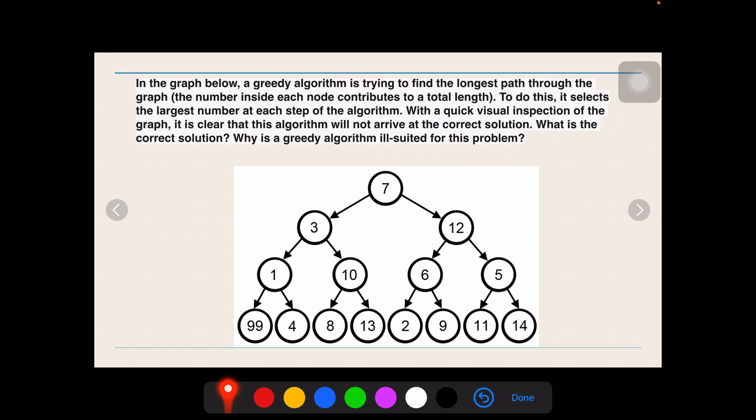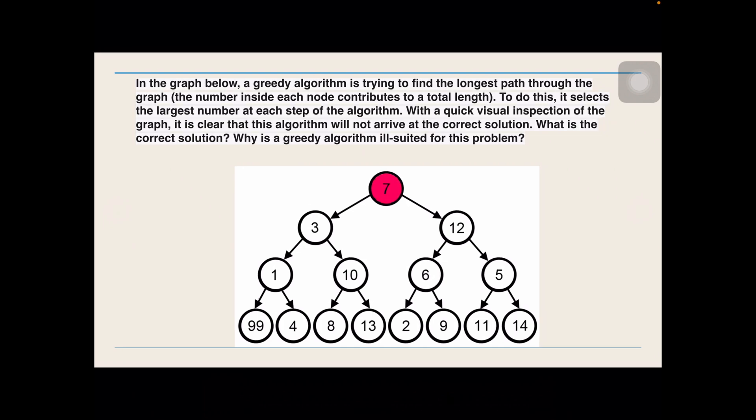So, we approach it in a way that we take local maximum at each step and see whether the total path is a global maximum or not. Now, at each step, this is 7. Now, this is 3 and 12. Which is larger? 12. So, locally, 12 is our best choice. Now, since we come to 12, next is 6 and 5. Which is greater? 6. 6 is our local best choice. Then, it's 9. So, 7 plus 12 plus 6 plus 9 is the total length that we get. But, is it the correct solution? Is this the maximum path that we can travel? What is the answer to it? The answer is no.